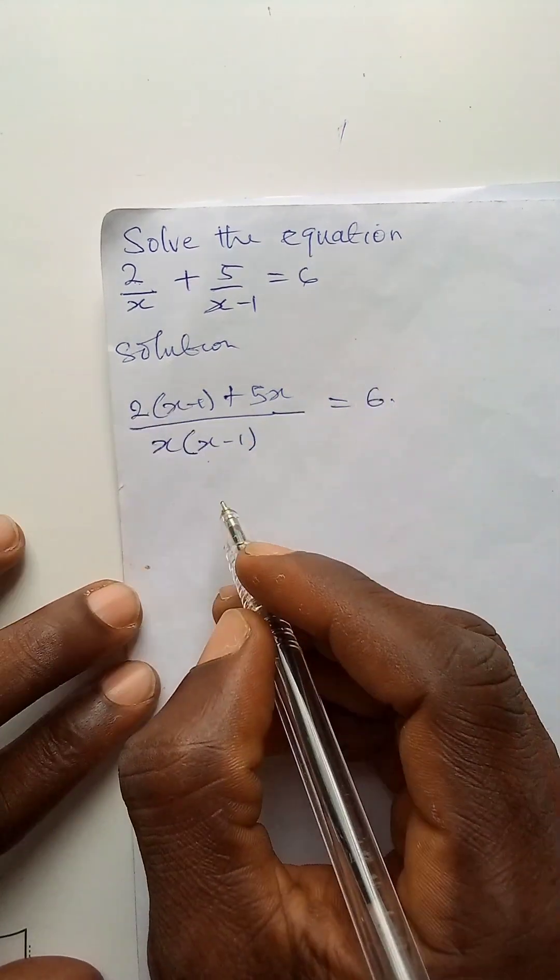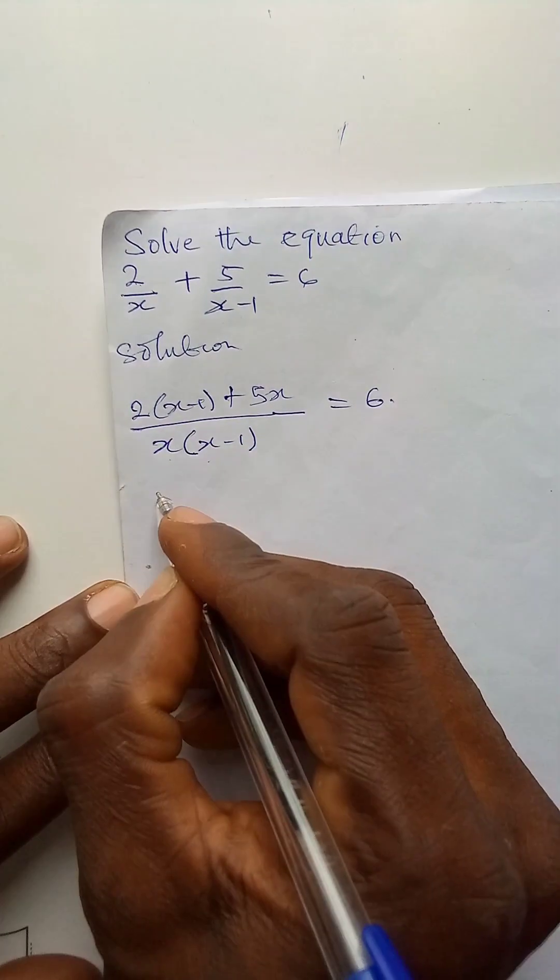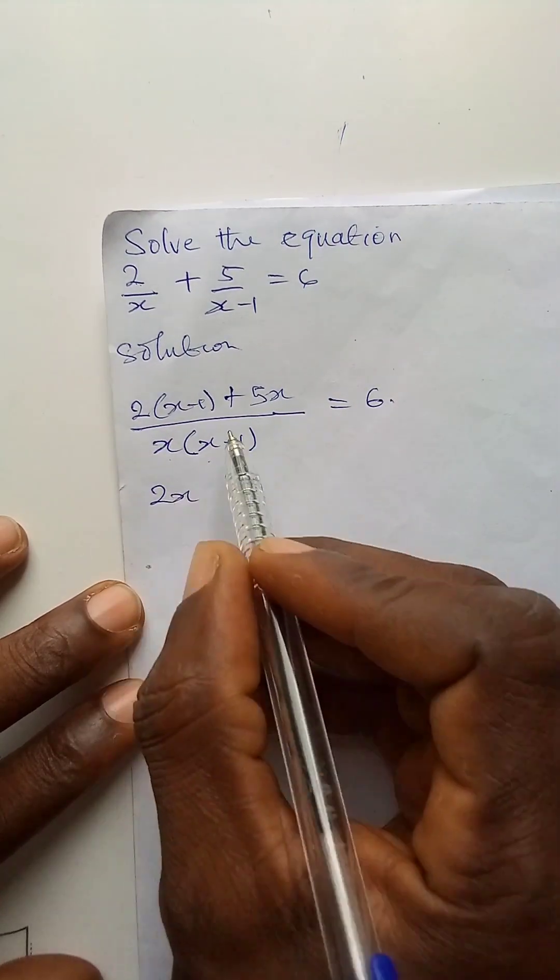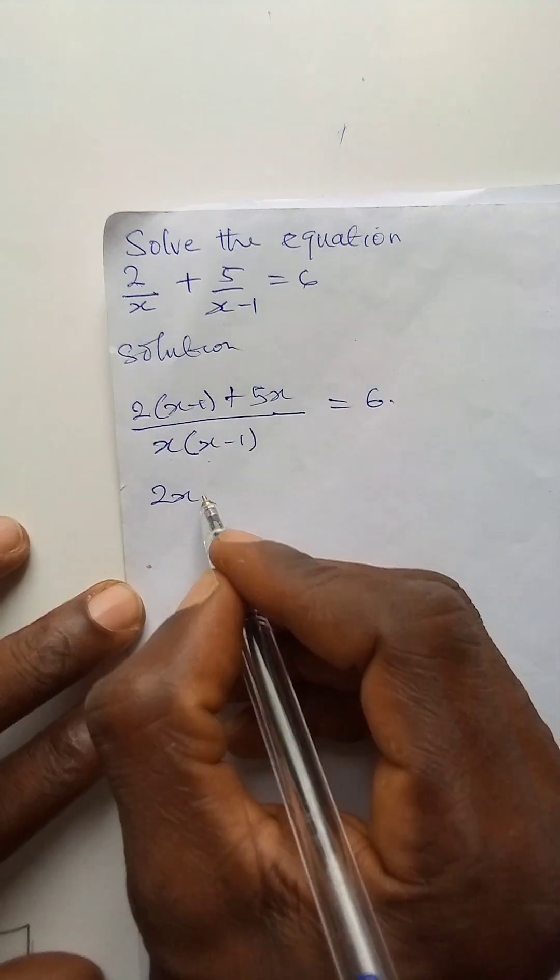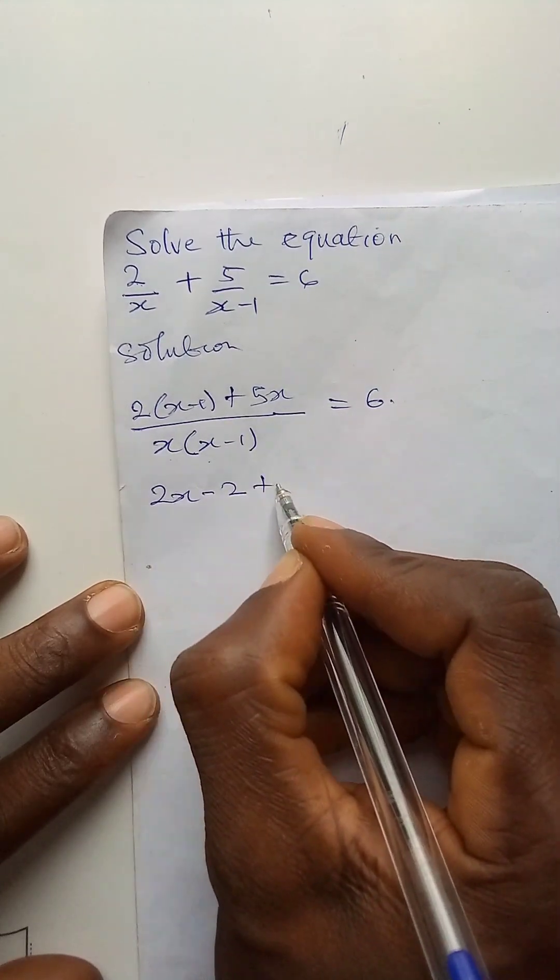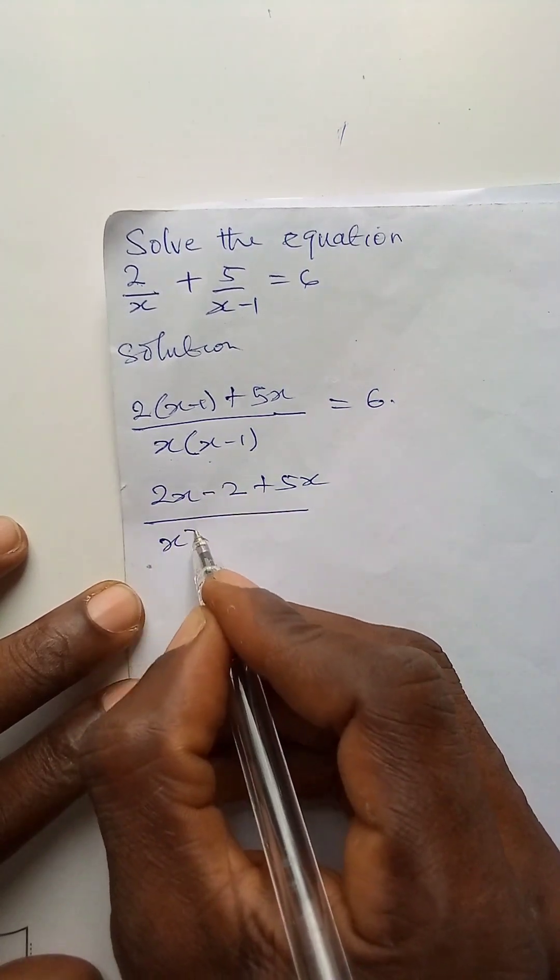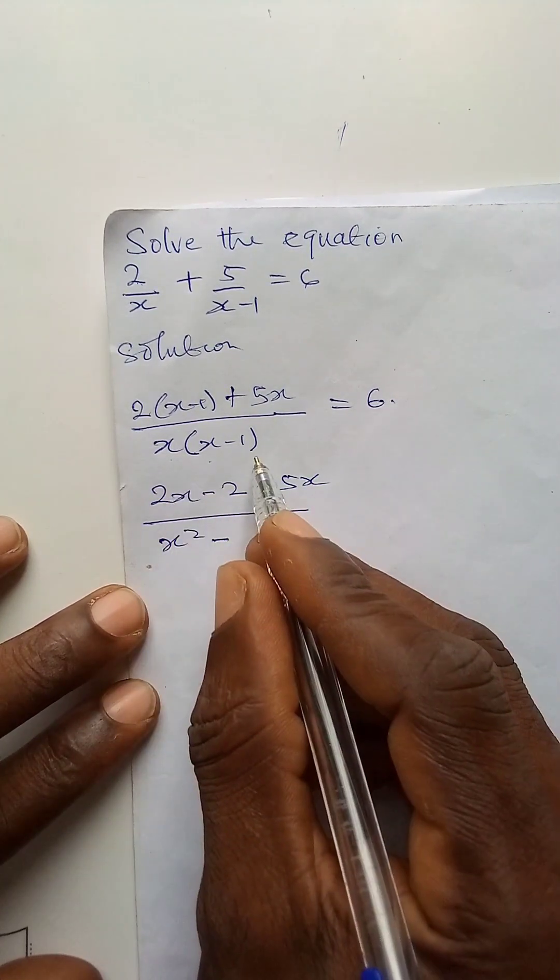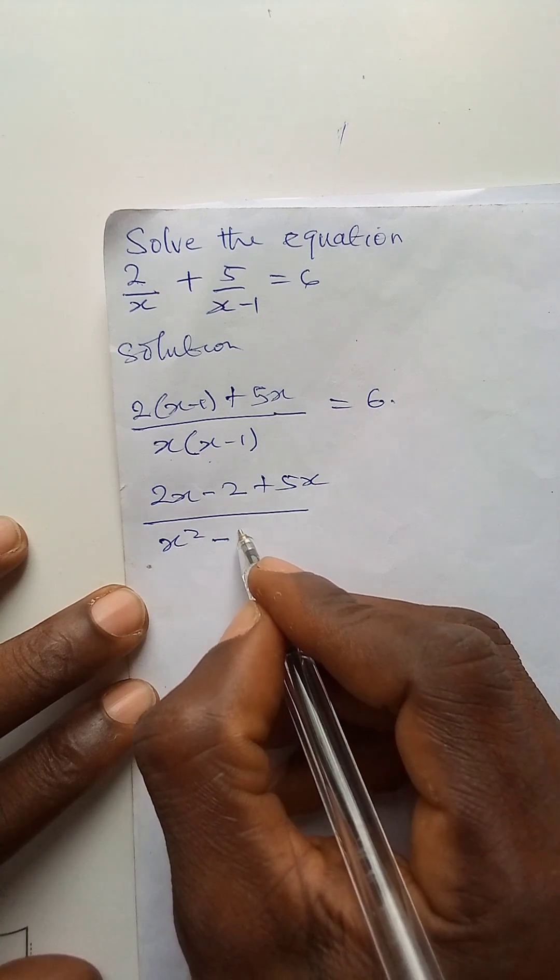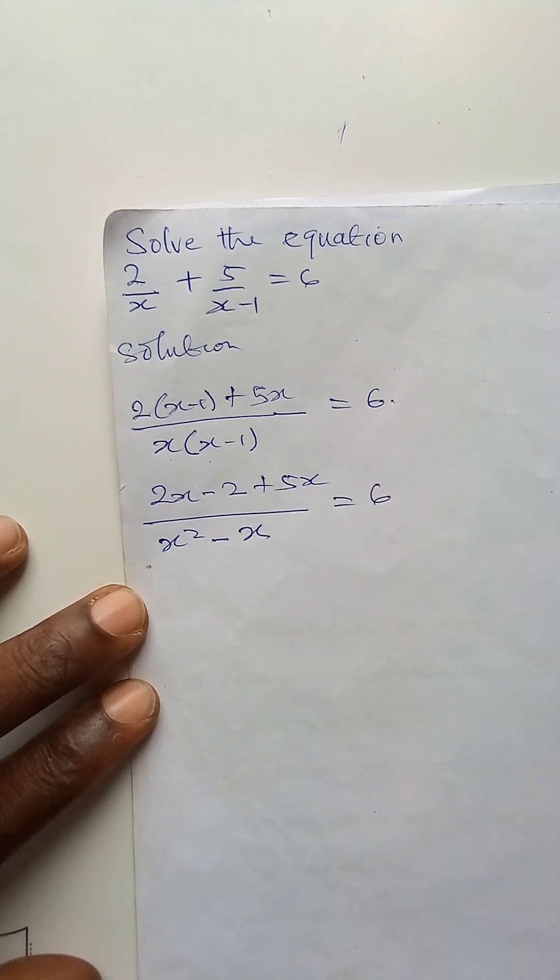Let us open the brackets. 2 times x is 2x. 2 times minus 1 is minus 2 plus 5x over x times x is x squared, x times minus 1 is minus x. Then it is equal to 6.